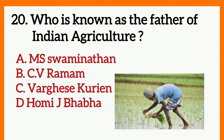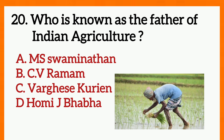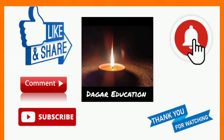Question number 20: Who is known as the father of Indian agriculture? Correct answer is A — M.S. Swaminathan.